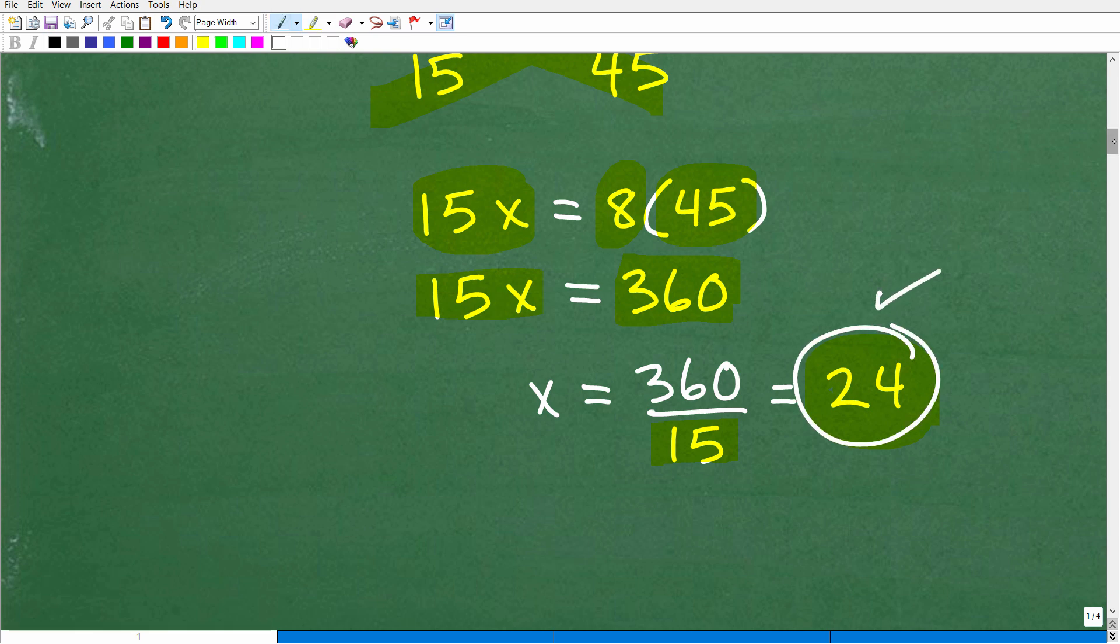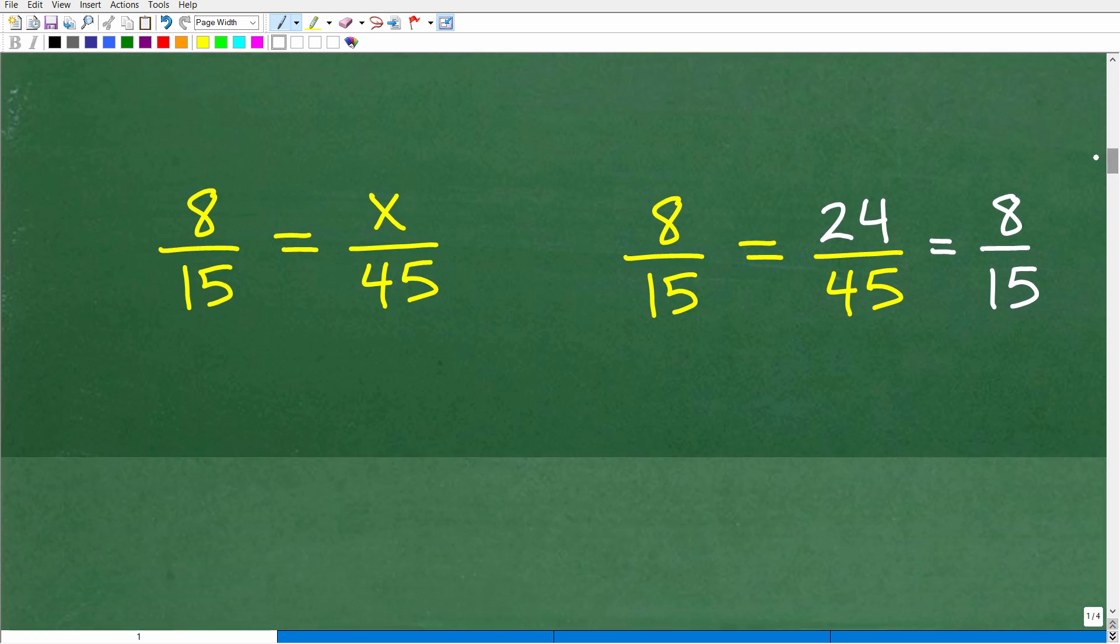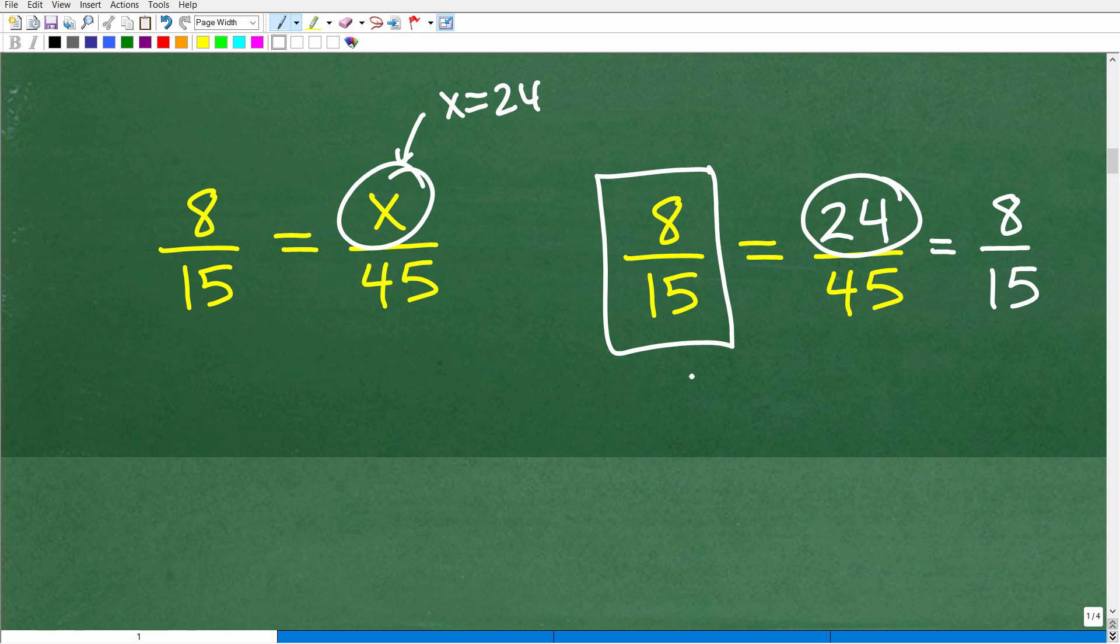So that is our answer, but let's go ahead and check that. Let's make sure this makes sense. So x is 24, so this is going to be 24. That's the number here that we're saying is going to make this into two equal fractions, but let's go ahead and check that now. Let's replace this x with a 24 and let's see if this makes sense. So we have the fraction 8 fifteenths and we're saying that's equal to the fraction 24 over 45.